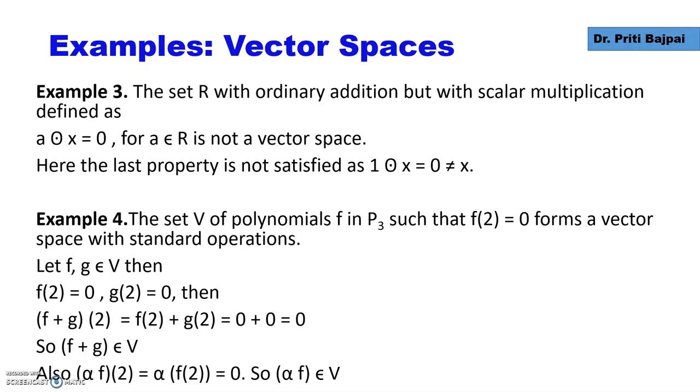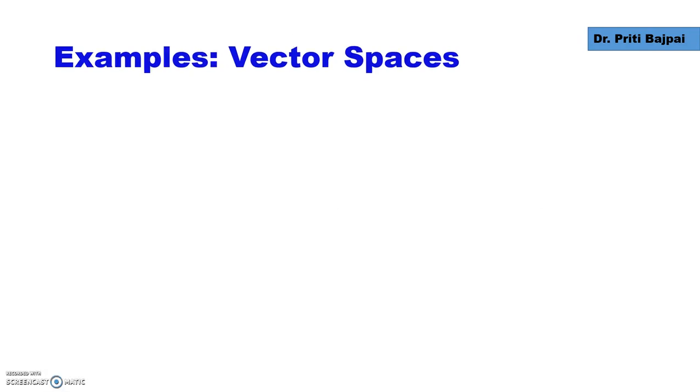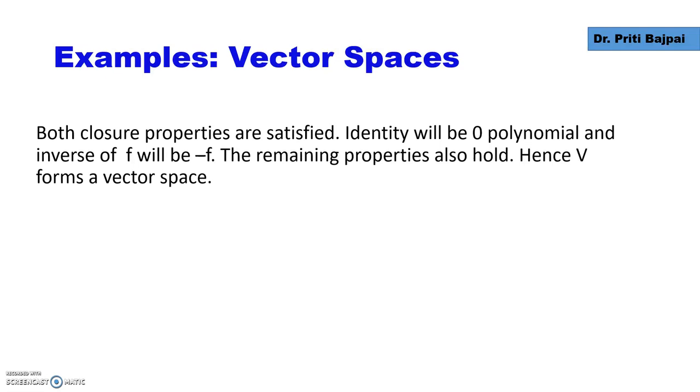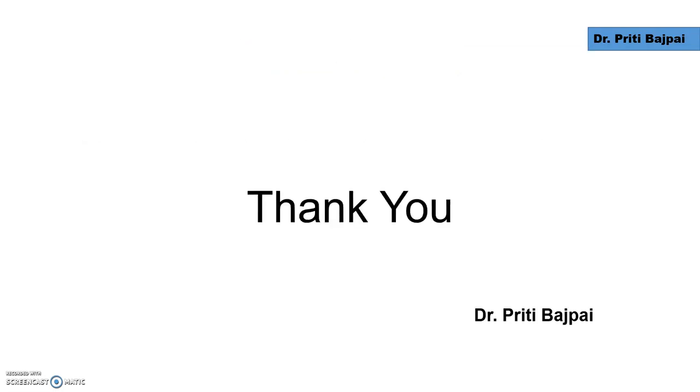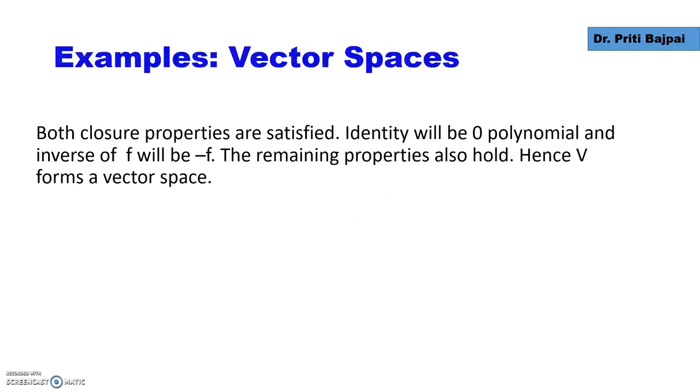Also, the property of scalar multiplication is satisfied. So we have two properties done. Identity in our case will be the zero polynomial and inverse of f will be -f. Remaining properties can also be checked and all of them will hold. So V forms a vector space.